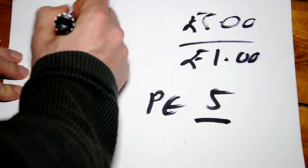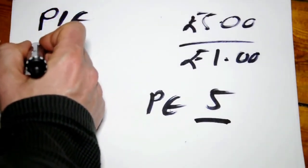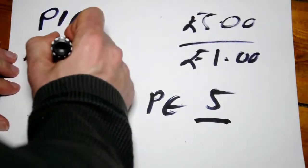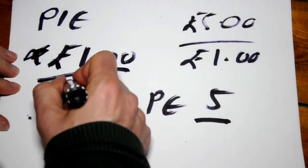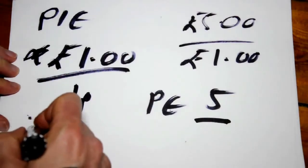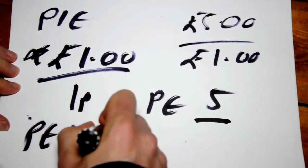However, with Pie in the Sky, the share price is one pound. We divide that by the earnings per share, which is just a penny. And so that gives us a P-E of 100.